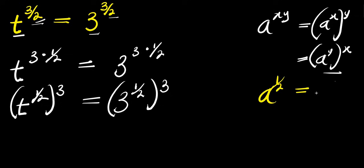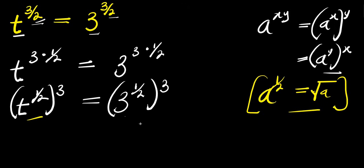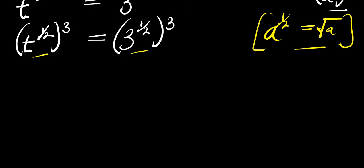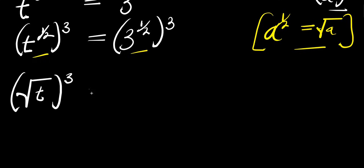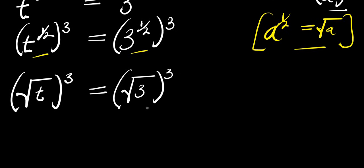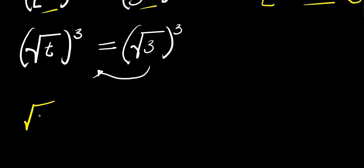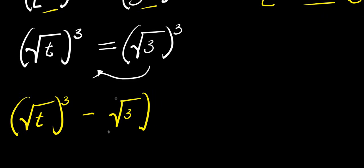Now if you have a to the power of one over two, this equals the square root of a. Applying this identity here and here, what we are going to have is square root of t raised to the power of three equals square root of three raised to the power of three. So I move this over here, giving us square root of t raised to the power of three minus square root of three raised to the power of three equals zero.